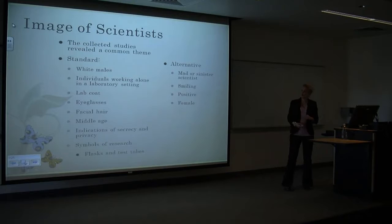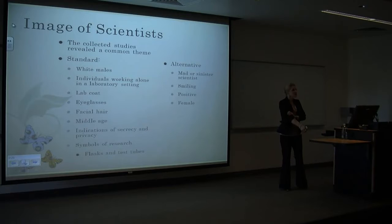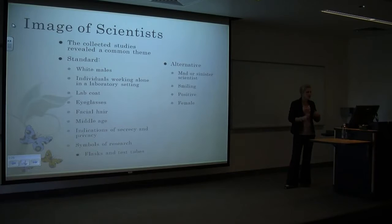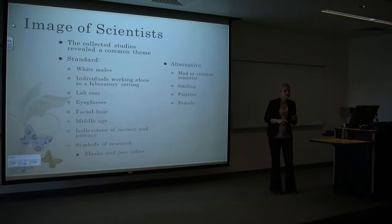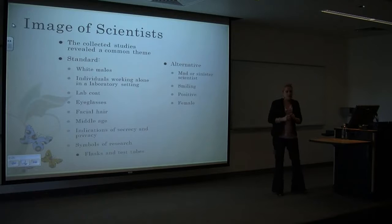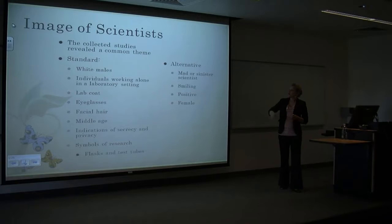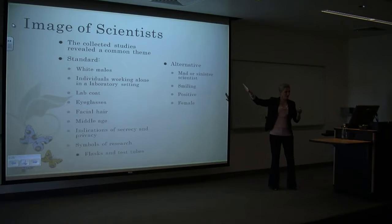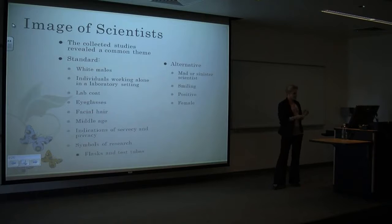The collected studies revealed a common theme: two general categories, standard and alternative. The standard view of a scientist includes male, lab coats, eyeglasses, facial hair, even some balding, pens in pockets, laboratory settings, flasks, and test tubes — the things we generally think of in a chemistry lab. The alternative, however, was the mad or sinister scientist, think Frankenstein, a smiling or positive character, and female. This was considered alternative.